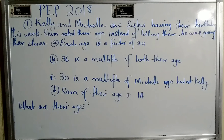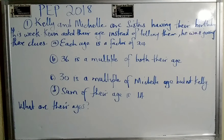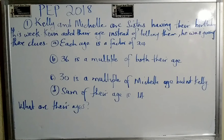It says that Kelly and Michelle are sisters having their birthday this week. Kevin asked their age. Instead of telling him, he was given these clues. Each age is a factor of 24. 36 is a multiple of both their ages. 30 is a multiple of Michelle's age, but not Kelly's.